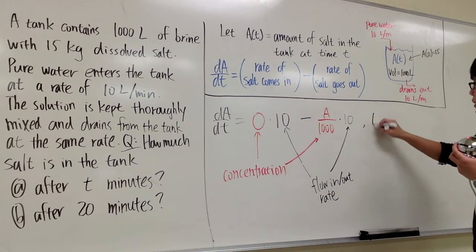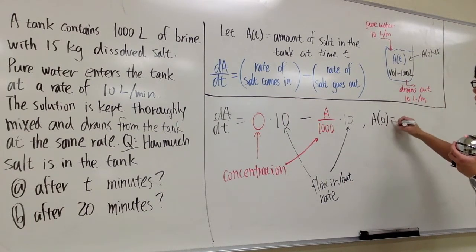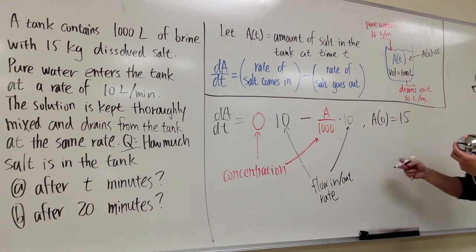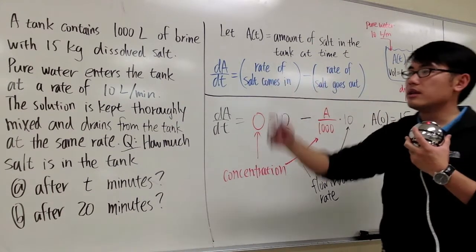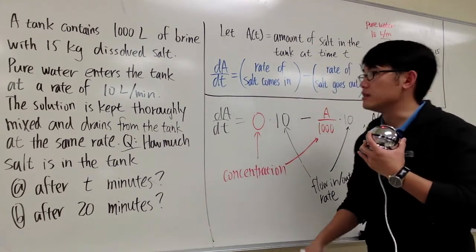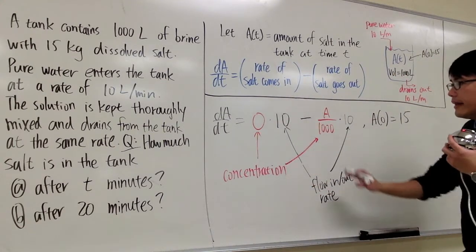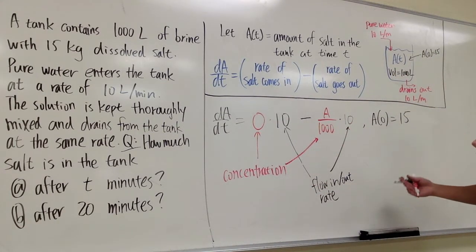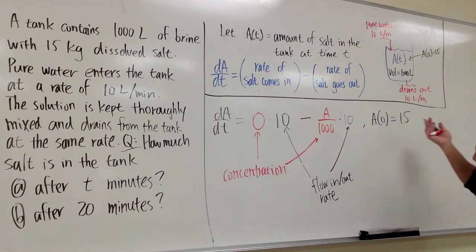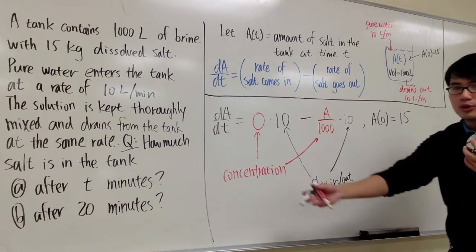And that's the differential equation. And we also have an initial condition. We know that A of 0 is equal to 15. Because initially, there was 15 kilograms of dissolved salt. And now after we set this up, we just need to solve this differential equation with the initial condition. Then we can pretty much answer the equation.